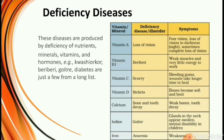Deficiency diseases are caused by the deficiency of certain nutrients like minerals, protein, carbohydrates, fat, and vitamins. For example, deficiency of vitamin A causes night blindness; beriberi is caused by deficiency of vitamin B1; scurvy by deficiency of vitamin C; rickets by deficiency of vitamin D; bone and tooth decay by deficiency of calcium; goiter by deficiency of iodine; and anemia by deficiency of iron.